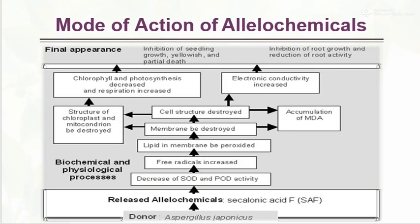Mode of action of allelopathic chemicals. First, release of allelopathic chemicals. Cinnamic acids and SAFs decrease catalase and POD activity. Then free radicals increase, causing lipid membrane peroxidation — membrane is destroyed. Cell structure is destroyed; chloroplasts and mitochondria are destroyed and accumulation of MDA occurs. The final appearance of allelopathic chemical effects is inhibition of seedling growth, yellowing, and partial death.